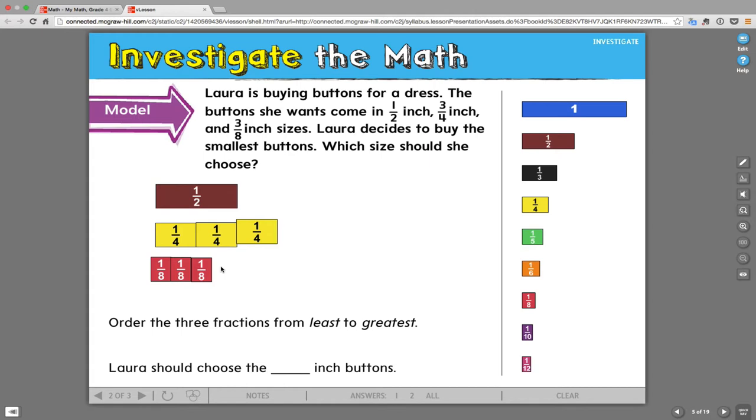With the fraction tiles, this makes it pretty easy to see that three-eighths is the smallest of the fractions. It wants us to order them from least to greatest. So our first fraction is the smallest one, which is three-eighths. Our next one would be the half-inch. And our largest size would be three-fourths. Laura should choose the three-eighths inch button.